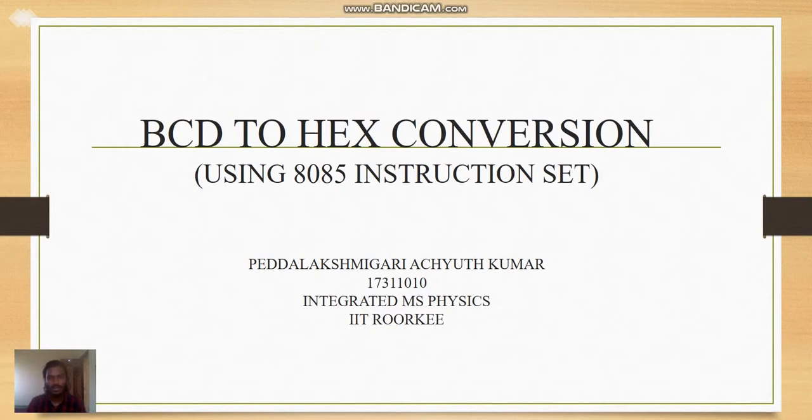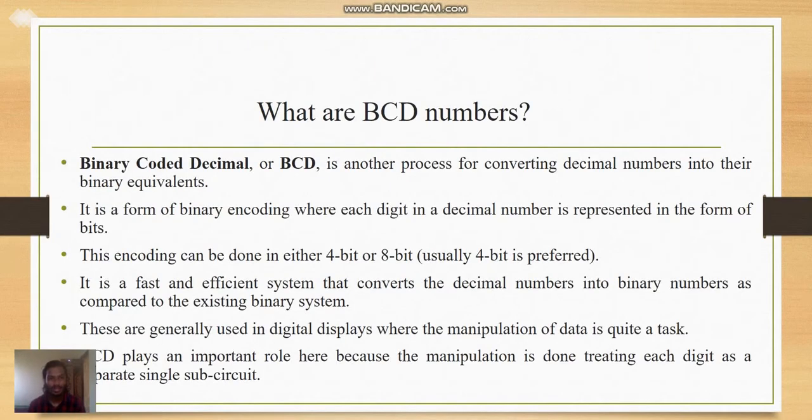Proceeding further, let us know what are BCD numbers. The full form of BCD is Binary Coded Decimal, which is another process for converting decimal numbers into their binary equivalents. It is a form of binary encoding where each digit in a decimal number is represented in the form of bits.